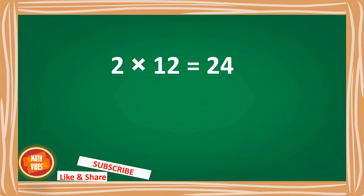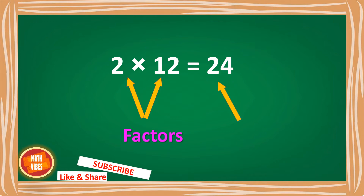So that means if I write 2 × 12 = 24, then 2 and 12 are both the factors and 24 is the multiple. Now you have understood what factors are and what multiples are.